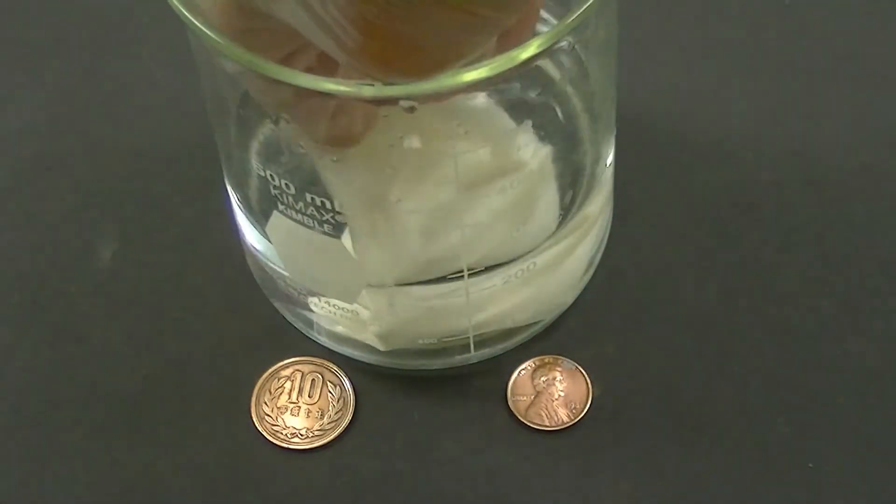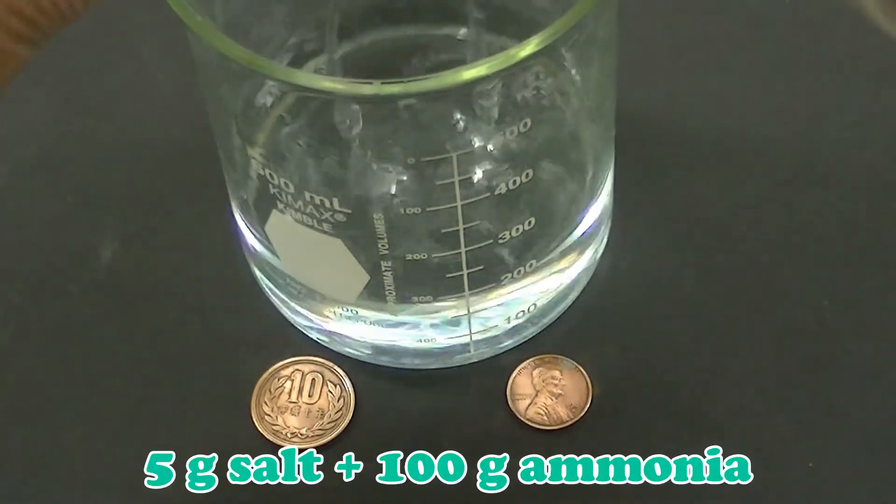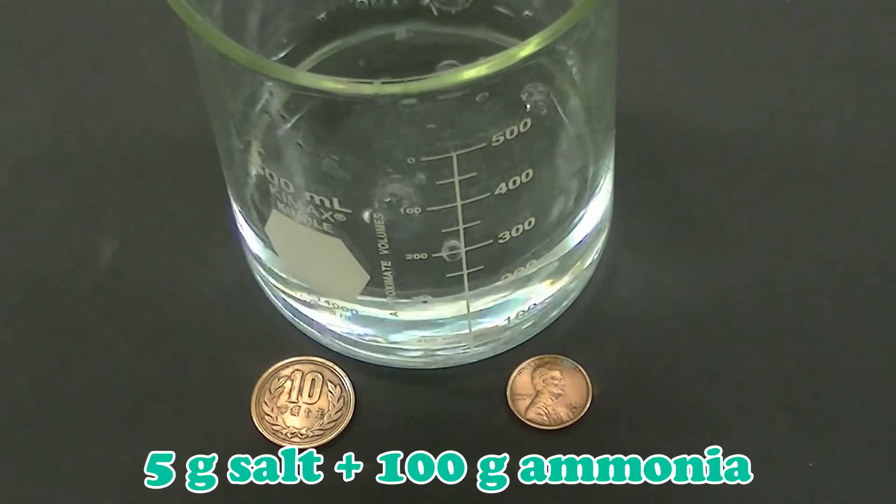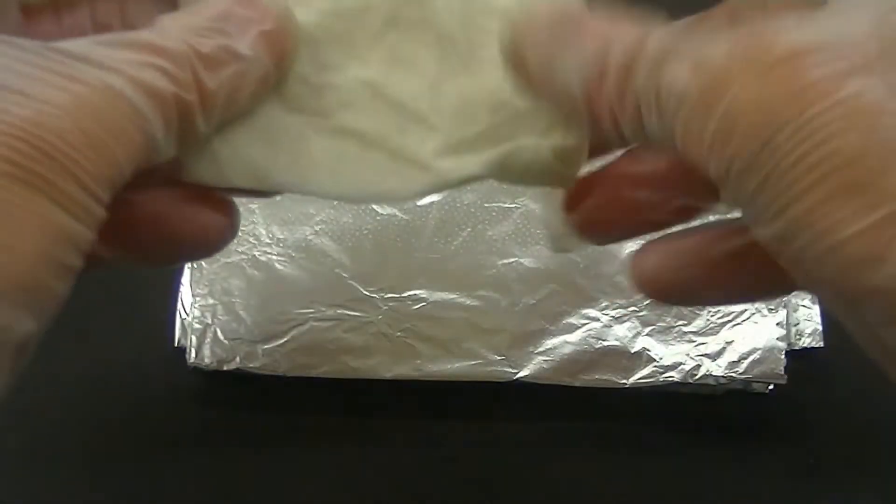I'm also going to soak this paper towel in a mixture that contains 5 grams of table salt dissolved in 100 grams of household ammonia. After squeezing out some excess fluid, the paper towel is placed on top of some aluminum foil.